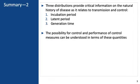Three distributions provide critical information on the natural history of disease as it relates to transmission and control: the incubation period, that is the time to symptom onset; the latent period, that is the time to becoming infectious; and the generation time, that is the time between subsequent generations of infection.